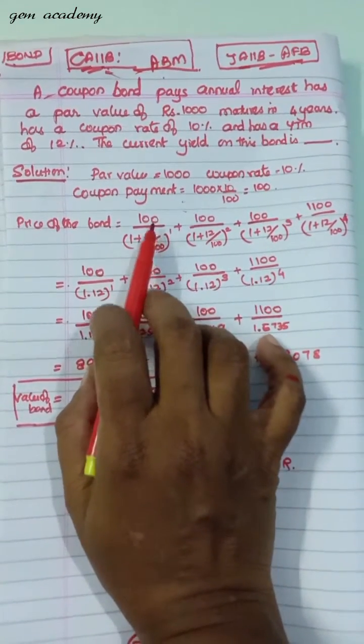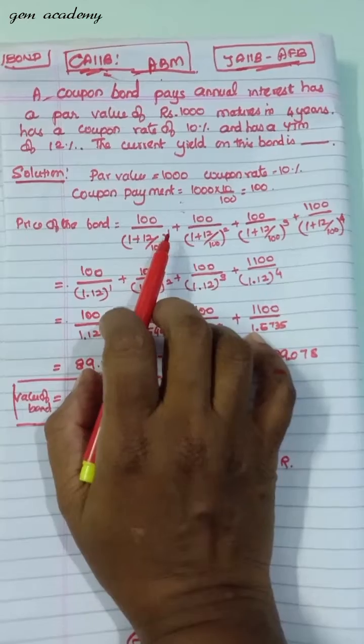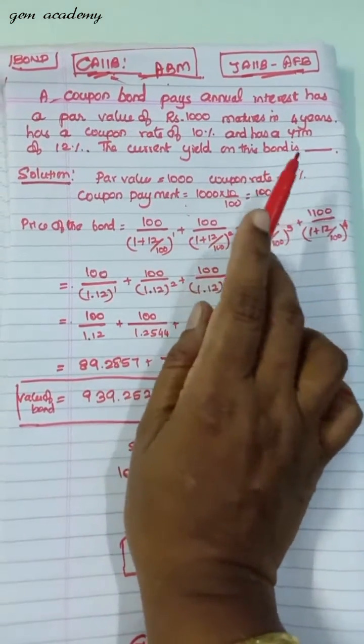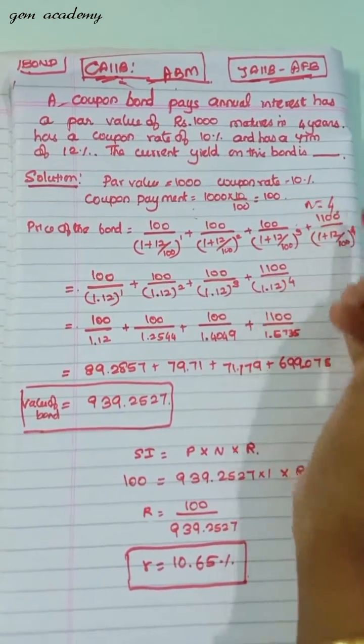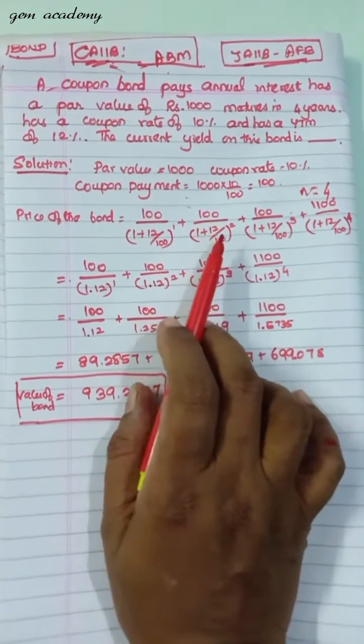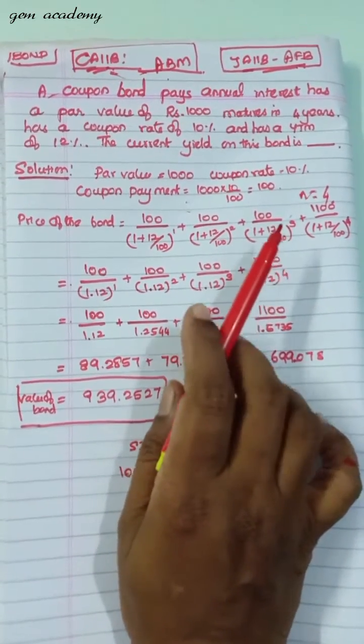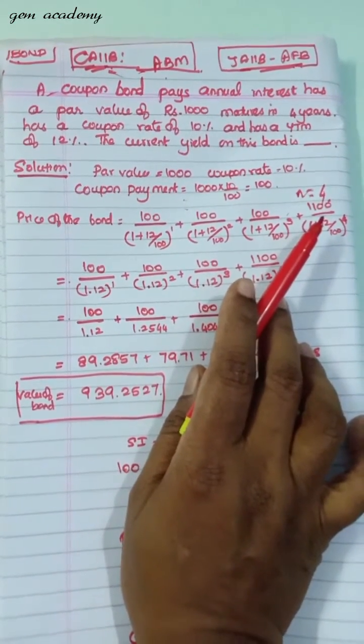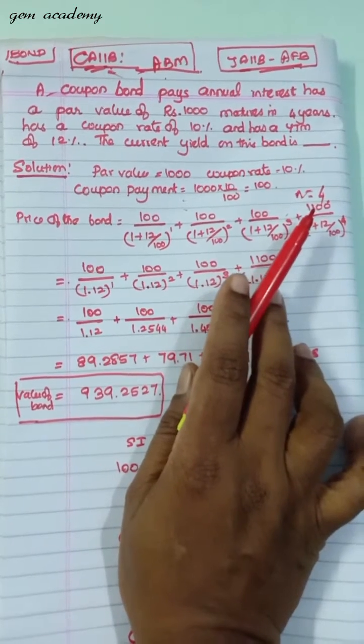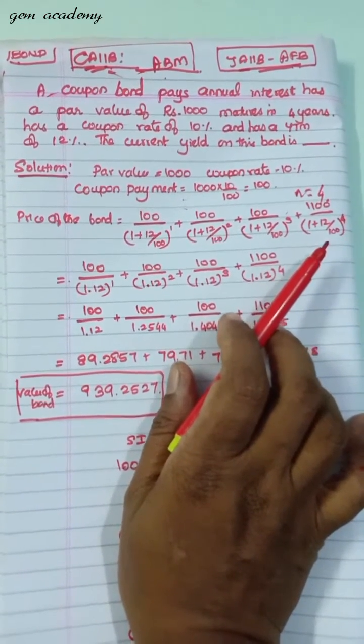Price of the bond is 100 (the coupon payment) divided by (1+r)^1. Here the number of years is 4, so N=4. So 100/(1+12/100)^1 + 100/(1+12/100)^2 + 100/(1+12/100)^3. And for the final year we have 1100/(1+12/100)^4.